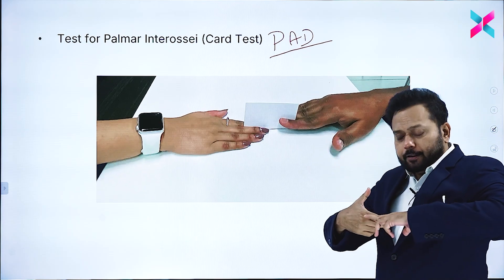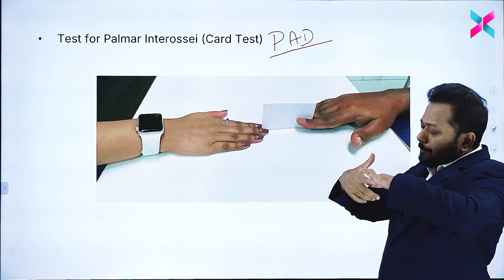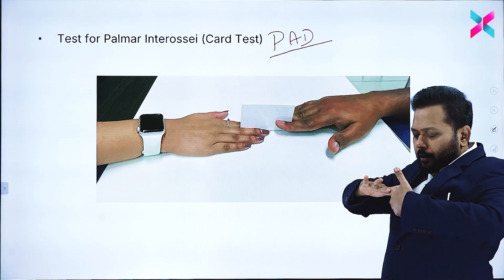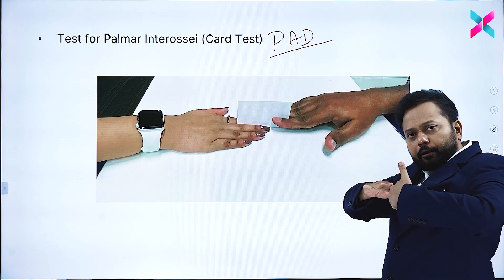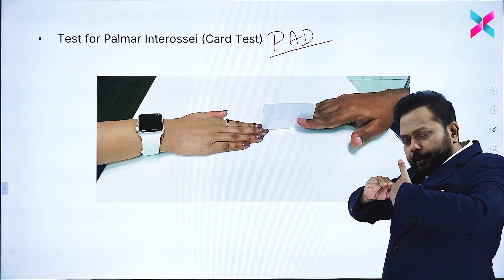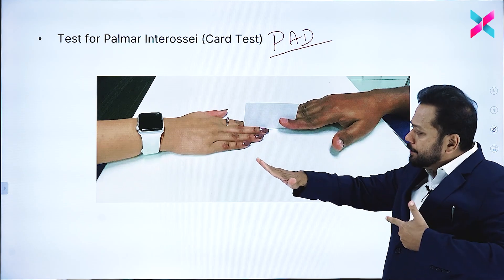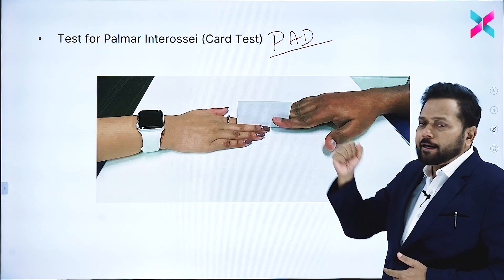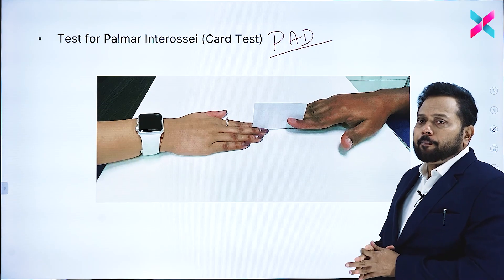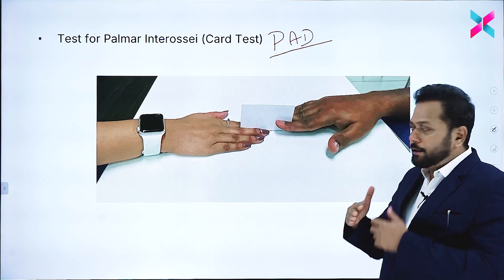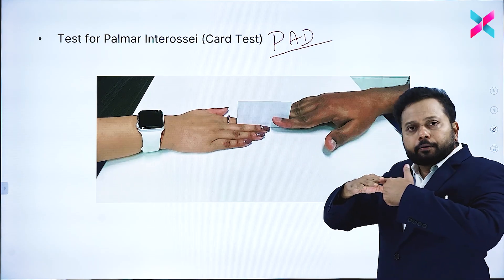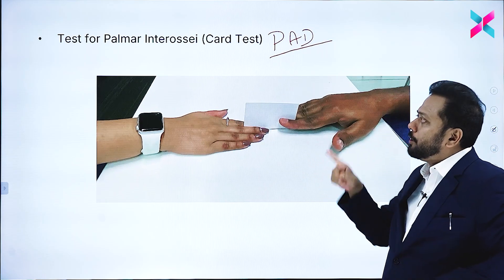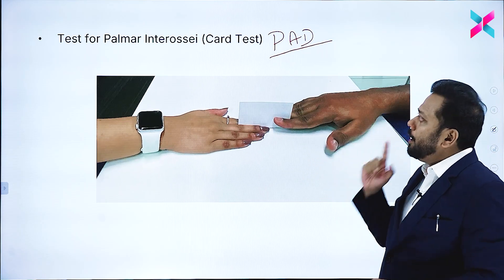When you hold a card, you are able to adduct the fingers well, so it is difficult to pull the card away because adduction is possible through the palmar interossei. If the patient has ulnar nerve palsy, since the palmar interossei cannot perform adduction, you can easily remove the card. This is called the card test.